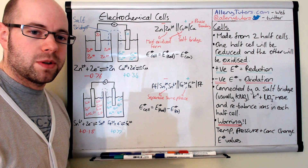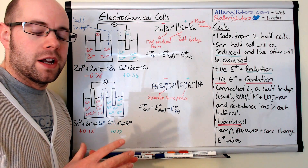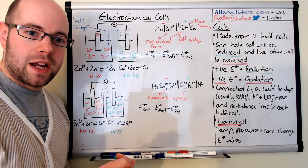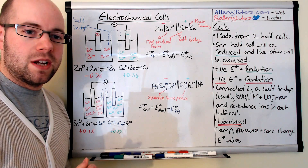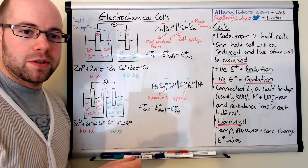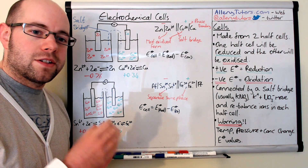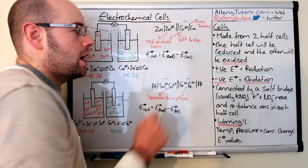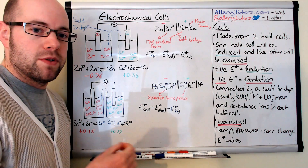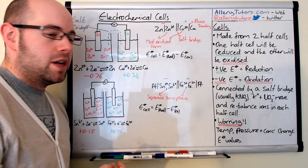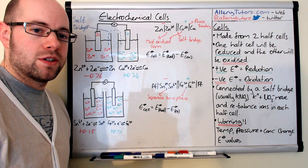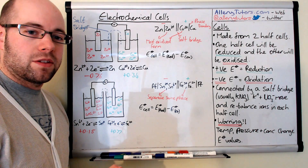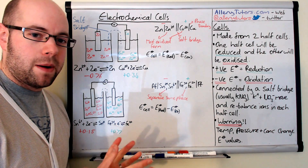We're going to use something called E° values. E° values show us how well a reaction will either accept or donate electrons, and they're given a positive or negative value. Positive E° values mean that the reaction is more likely to be reduced, and negative E° values show that the reaction is more likely to be oxidised. We're going to use that quite a lot throughout these examples.